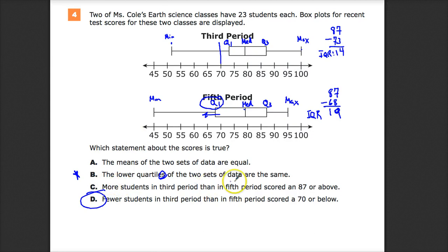For C, more students in third period than fifth period scored an 87 or above. The problem is we know they both have 23 students. We're breaking up the numbers based on how many people are there. So a fourth essentially of 23. I know that doesn't work out evenly, but around that. I can only assume that it's possible that the same number ends up in Q4.